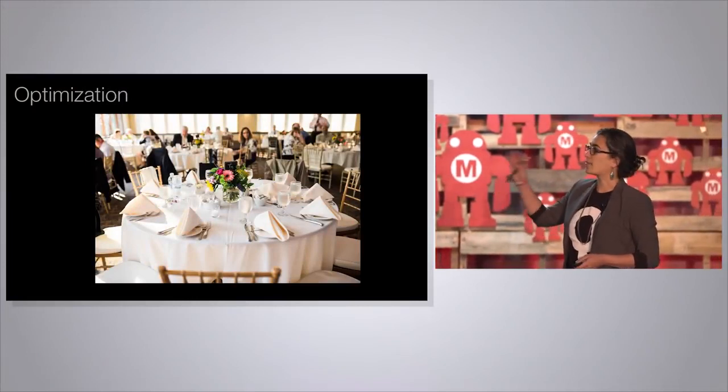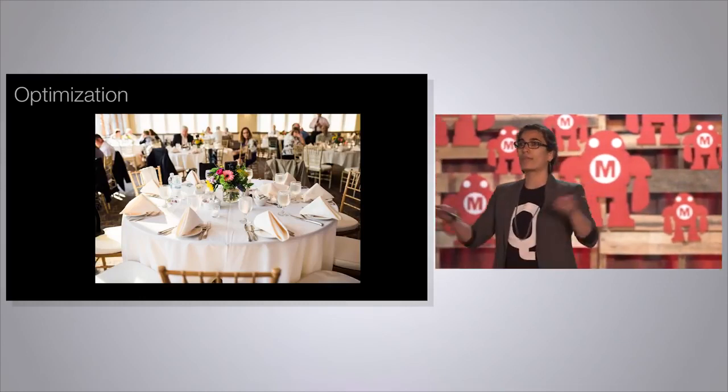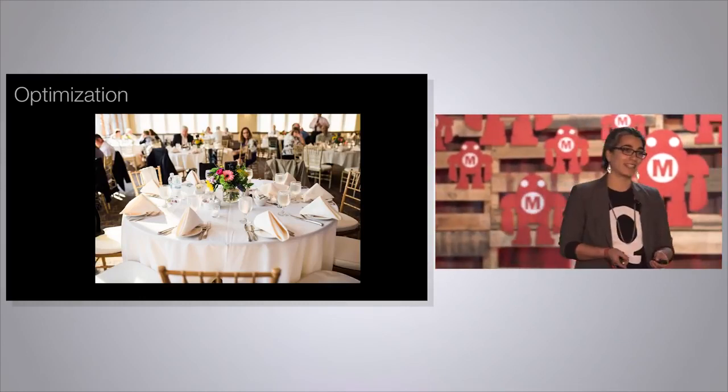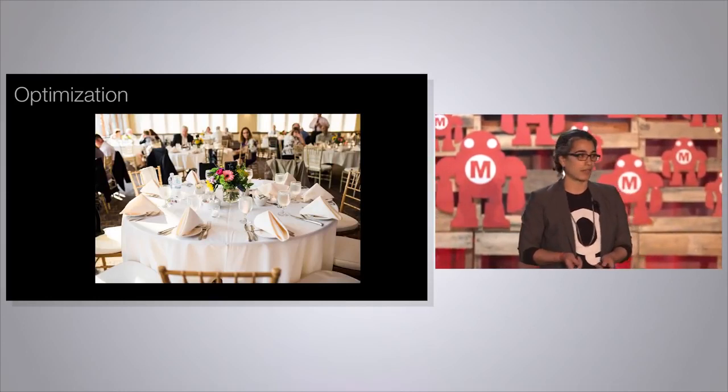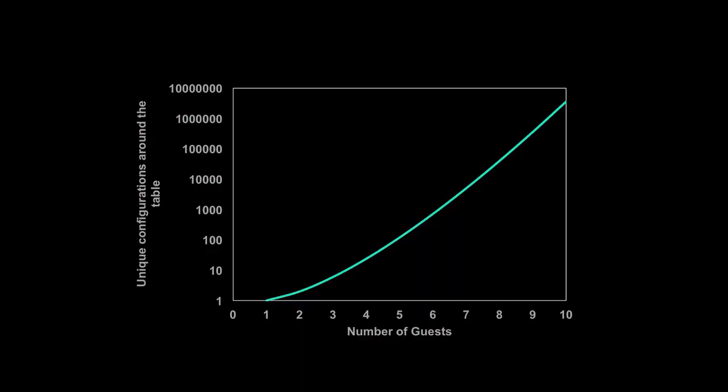The first example is optimization — finding the best solution to a problem among many possible solutions. Here's a picture of a table from my wedding. You can see ten people around a table. How many different ways are there to configure ten people around a table? The answer is ten factorial. The number ten seems so small but ten factorial is 3.6 million. There are 3.6 million ways to arrange ten people for dinner! When we go and do this, we consider some of the options and make approximations, because every time I add one person to my dinner table the number of possible configurations grows exponentially. We can solve small versions of this problem on classical machines but we don't solve big versions of this problem very well at all.